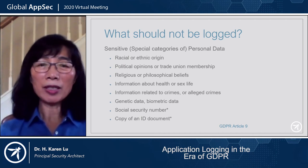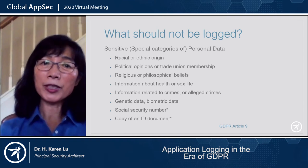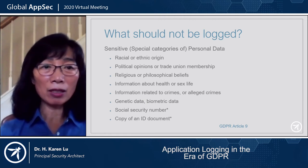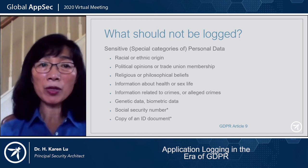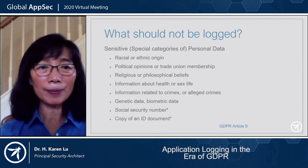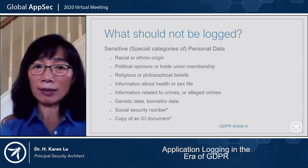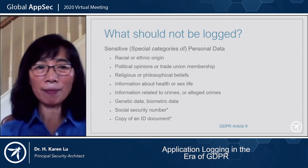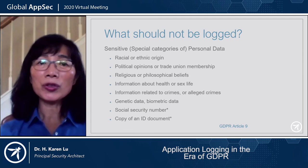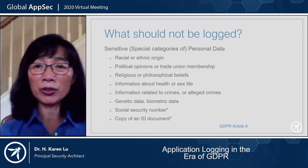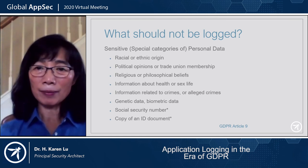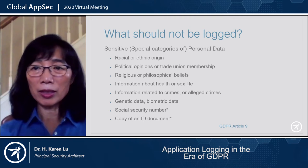What should not be logged? Sensitive data — in GDPR terms called special categories of personal data — should not be logged. These include racial or ethnic origin, political opinions or trade union membership, religious or philosophical beliefs, information about health or sex life, information related to crime, genetic data, biometric data, social security number, and copies of ID documents. You must have really good reasons to include such data in a log — for example, for public safety or saving lives — and explicit consent may be required.